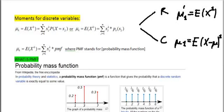Now, we also saw that mean was the first raw moment and the variance was the second central moment.